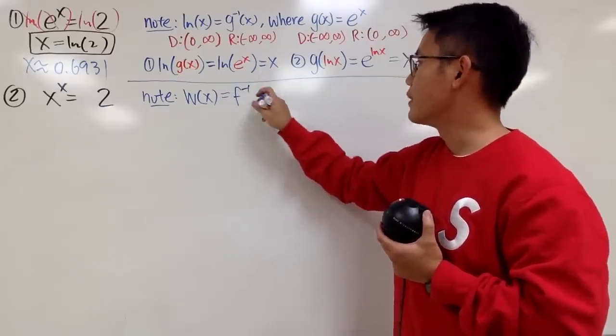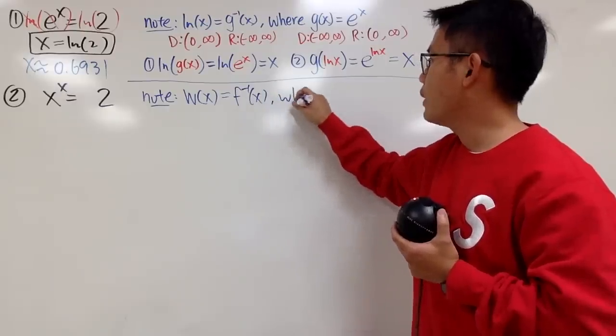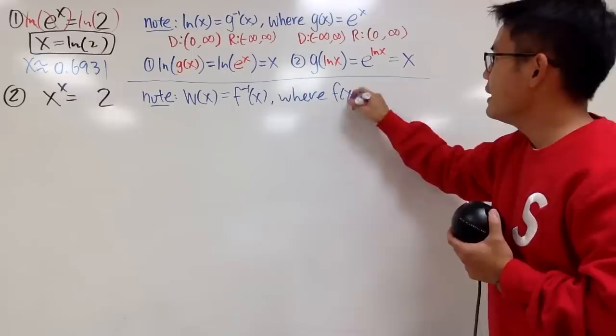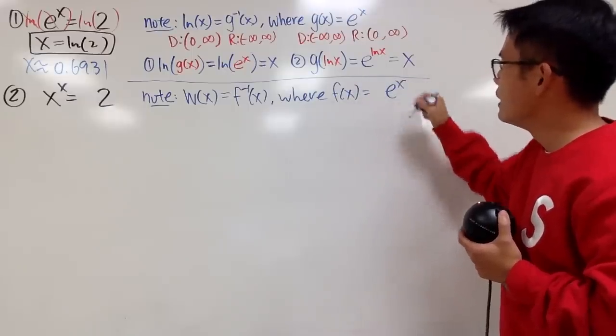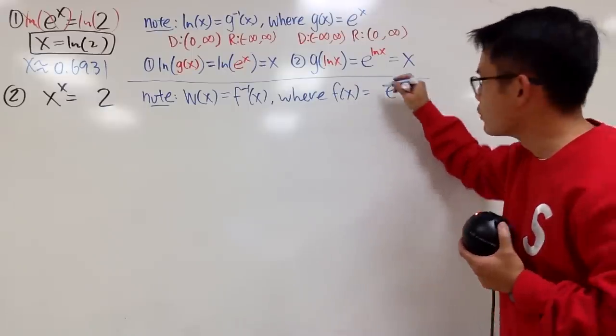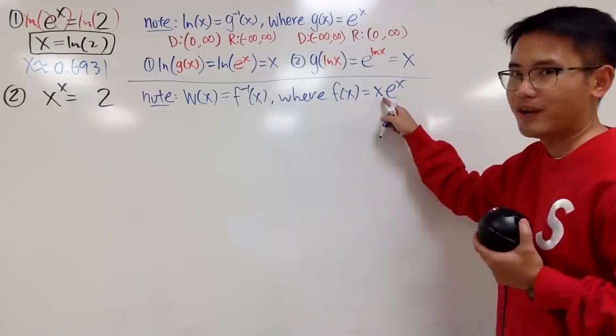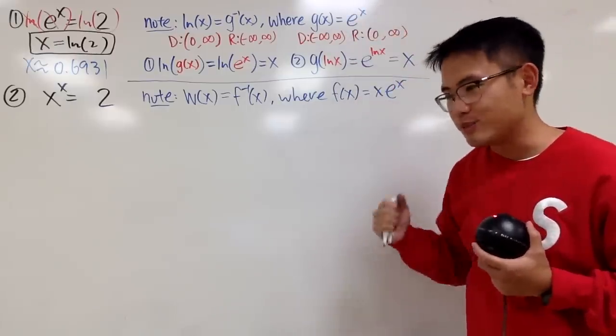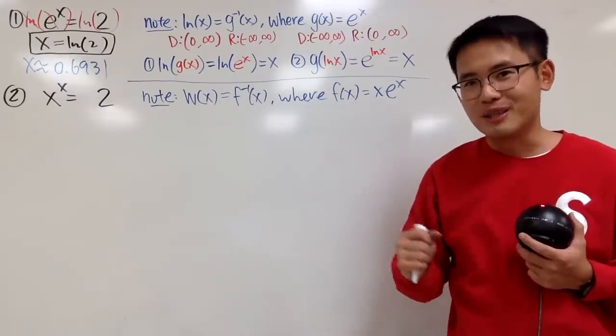And this right here also is an inverse of some function. So let me write it down. The inverse of f. And what f is this, though? Well, the f is not only e to the x, but also you have to multiply by an x in front. So as you can see, this is really similar to that, but I think this is more powerful and definitely more awesome.